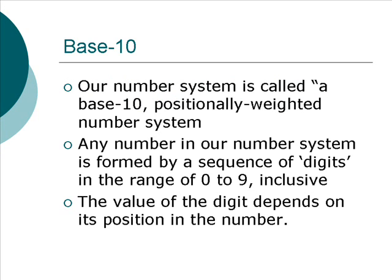Our number system is called a base-10 positionally weighted number system. Notice that any number in our number system is formed by a sequence of digits, and each digit is in the range of 0 to 9, inclusive. The value of the digit in the number depends on its position in the number.